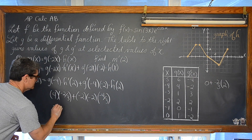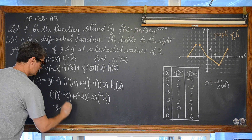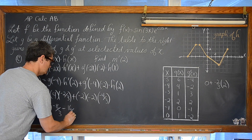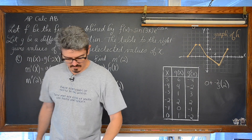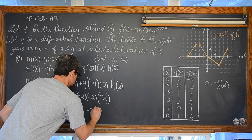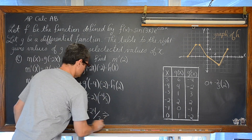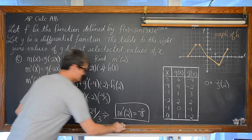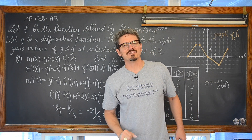We are looking at -8/3 plus... negative times negative is positive, times negative is negative, so (-2)(-2)(-4/3) = -16/3. Therefore -8/3 + (-16/3) = -24/3, which of course is -8. So m'(2) = -8.